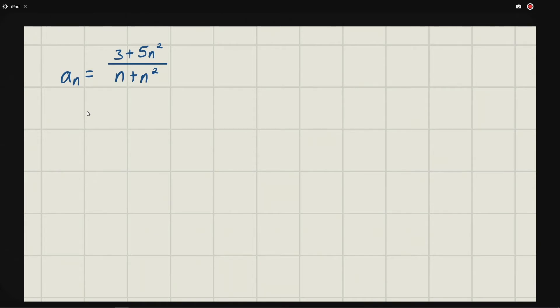The highest power in the denominator is n squared. So we're going to divide everything by n squared. We have three divided by n squared plus five n squared divided by n squared which is just five.